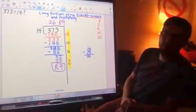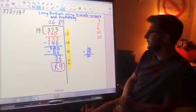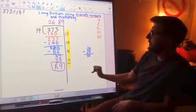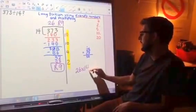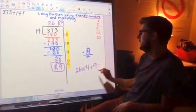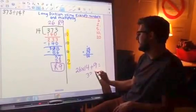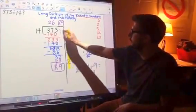26 remainder 9. And they can always check that with the calculator. What I've told them to do is now check it with the calculator. What's 26 times 14 plus 9? And that will equal 373, which is our original number up here.